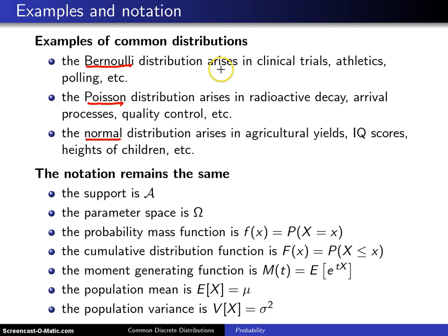The Bernoulli distribution arises in clinical trials. For example, you have either surviving five years from a particular type of cancer or not surviving five years. In athletics, the high jumper either clears the bar at six foot five or does not clear it. In polling, you either vote for the Republican or you do not. Anything that is a zero one is a Bernoulli.